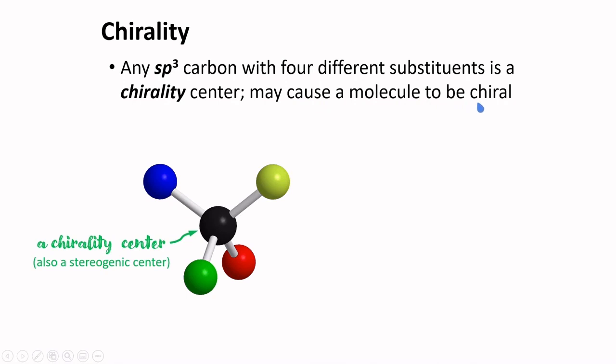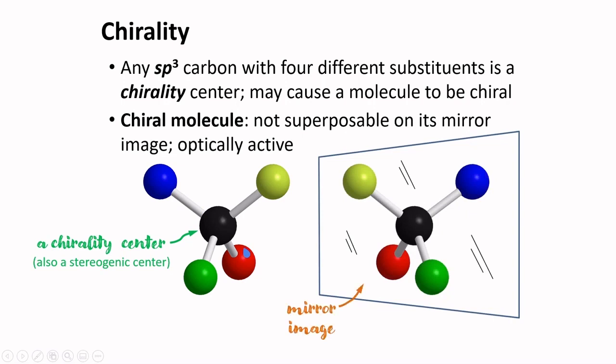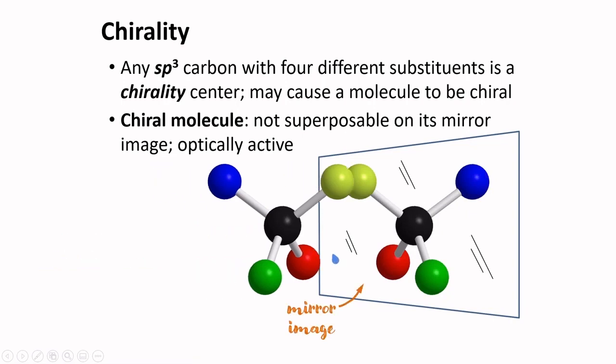Chiral is an ancient Greek word for hand. Note that a chirality center is also a stereogenic center, meaning that an interchange between two bonded atoms or groups can transform a molecule into another stereoisomer, much like the cis and trans isomers of alkenes. Because of the four different substituents in this atom, we can have a chiral molecule. A chiral molecule is not superposable to its mirror image.